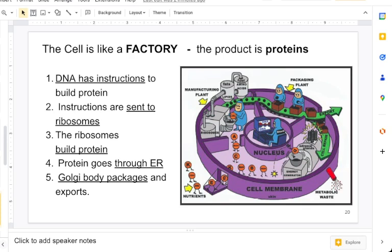Cells are like factories, and the product that cells make is proteins. DNA has instructions, or the blueprint, of how to build these proteins. These instructions are sent to ribosomes. The ribosomes build the proteins. The proteins go to the ER for packaging. The protein goes through the ER, and then the Golgi body packages and exports them.